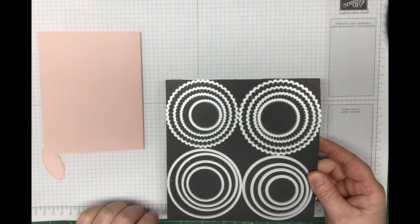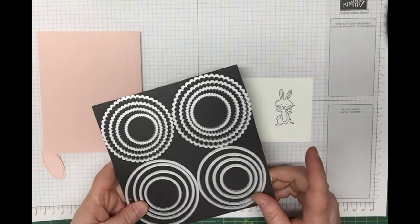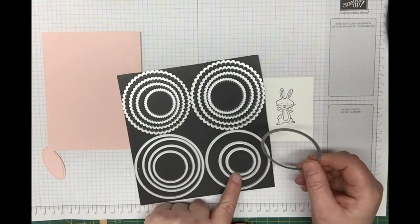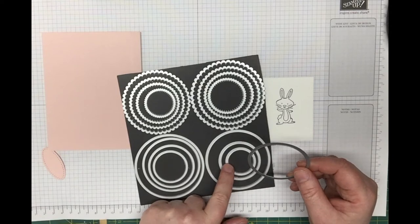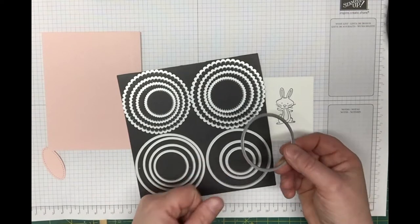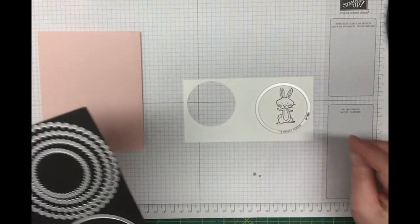I'm going to use layering circle framelits to cut out my rabbit. I'm going to use the fifth one from the smallest. So I always count smallest in: one, two, three, four, five. That's the circle I'm using to cut him out.